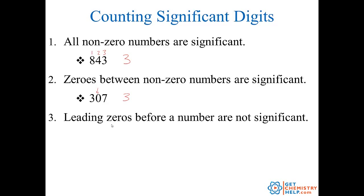Now rule three says that leading zeros — zeros that are on the left of a number — are not significant. So for example 0.0025: these leading zeros do not add anything to the precision of our measurement. I could write that number as 2.5 times 10 to the negative third, and you can see those zeros don't even show up in scientific notation. So just know that zeros on the left are not significant — this number has two significant figures.